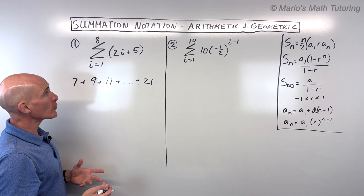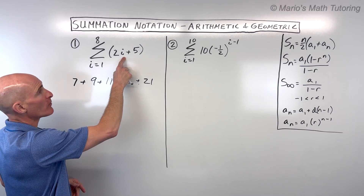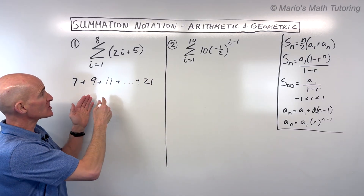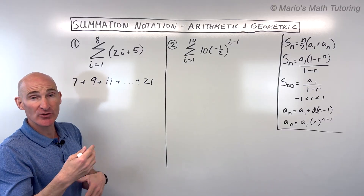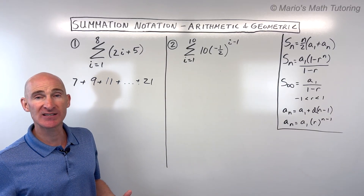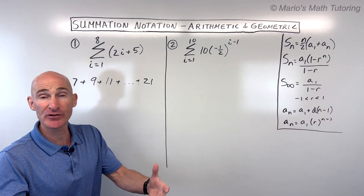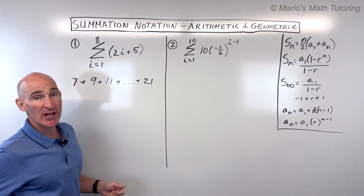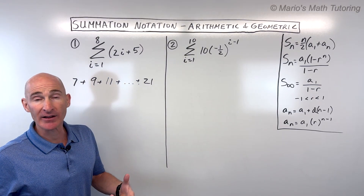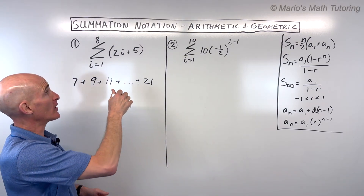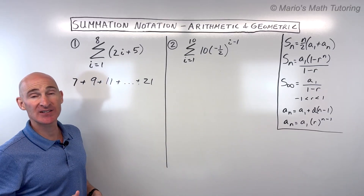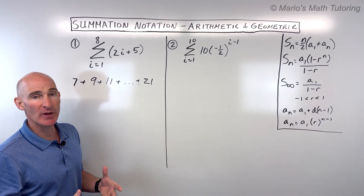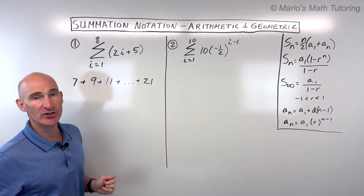One other way to notice it — sometimes students ask, how do I know that it's arithmetic? One way is to write down a few terms and you'll see the pattern: you're adding or subtracting the same common difference each time. You'll also notice that this looks very much like the equation of a line, like y equals mx plus b. It's going up with a slope of two — that's your constant rate of increase. But again, if you're not sure, write out a few of the terms.